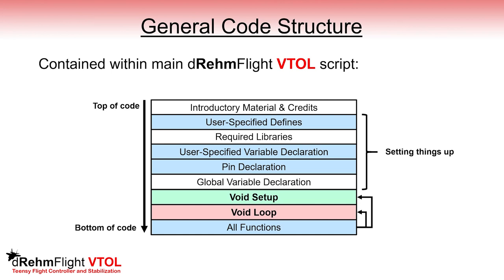The void setup and void loop sections are where code is actually executed. At the end, all of the functions called within the void setup and void loop are present. A function can be thought of as a block of code that, when called, is executed. They're used to segment the code into smaller, more focused sections.